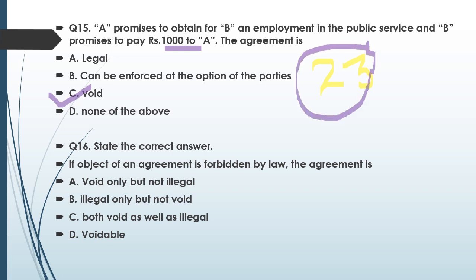Question number sixteen: If the object of an agreement is forbidden by law, the agreement is — option A: void but not illegal, option B: illegal but not void, option C: void as well as illegal, option D: voidable. Option C is the correct answer — it is both void as well as illegal. You should know this.